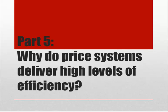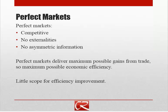Let's think a bit more about why price systems typically deliver high levels of efficiency. Everything we've done so far assumes what we call perfect markets, which meet three criteria. Perfect markets are competitive — there are many buyers and many sellers, so no single seller is able to dominate or manipulate the market price, nor do a group of sellers or buyers band together to manipulate it.